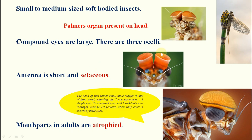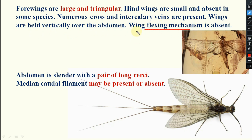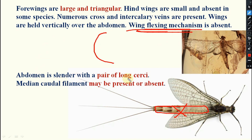Four wings are triangular and large. The hind wings are smaller and absent in some species. Most species have two pairs of wings. Numerous cross veins and intercalary veins are present. Wings are held vertically over the abdomen. Wing-flexing mechanism is absent, meaning they cannot rotate their wings back to the abdomen like a grasshopper.